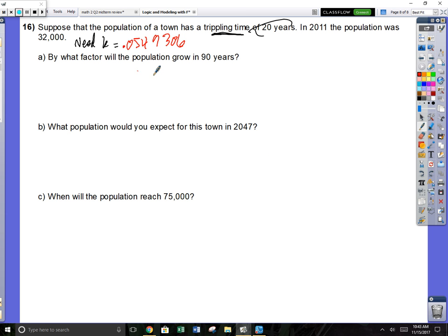By what factor will the population grow in 90 years? The end is equal to the start, 32 grand, times e to the k, 0.055. Don't round this decimal. Type the whole thing in. Don't ever round until the very end. Times 90.